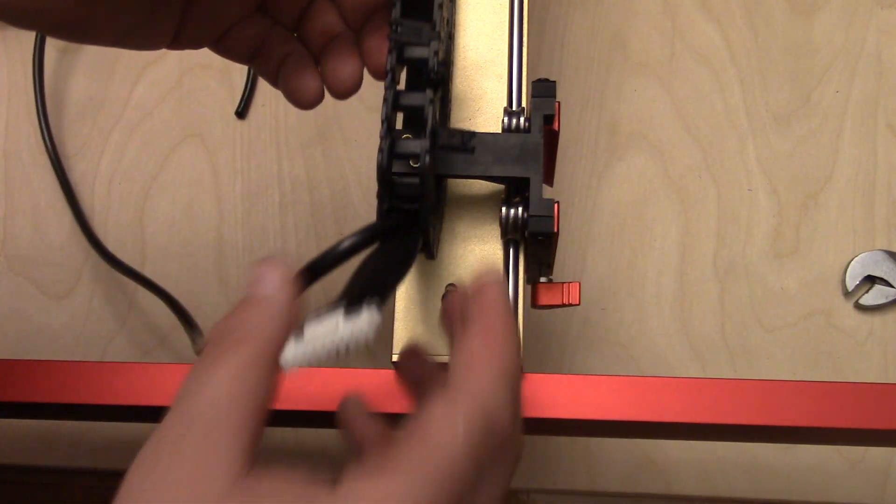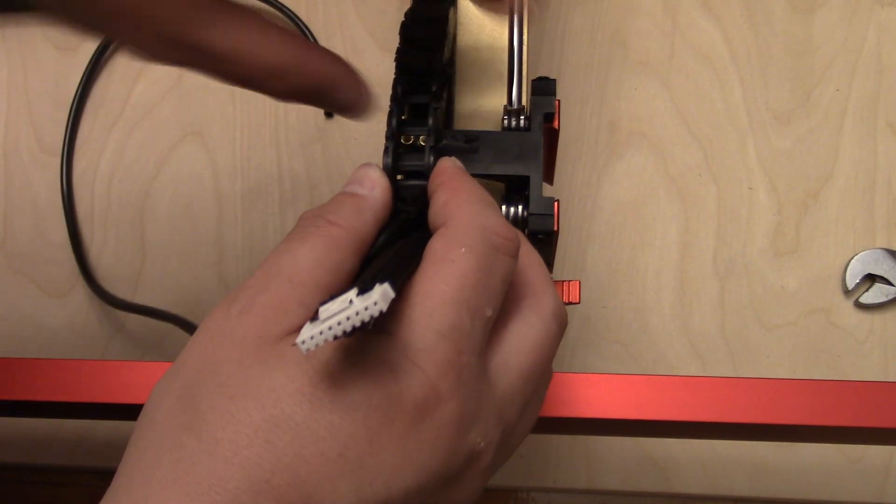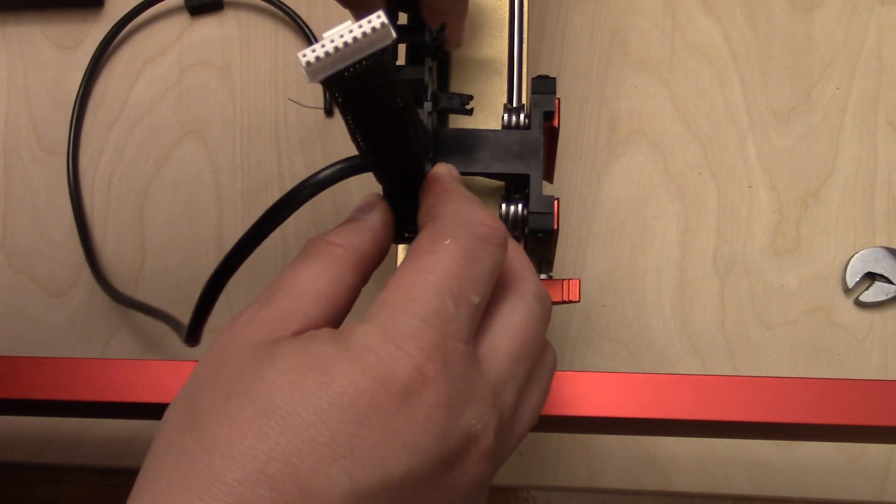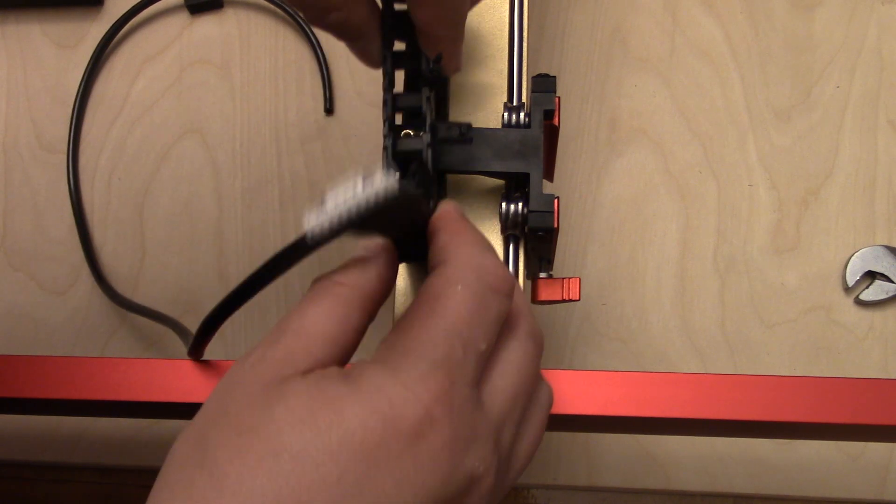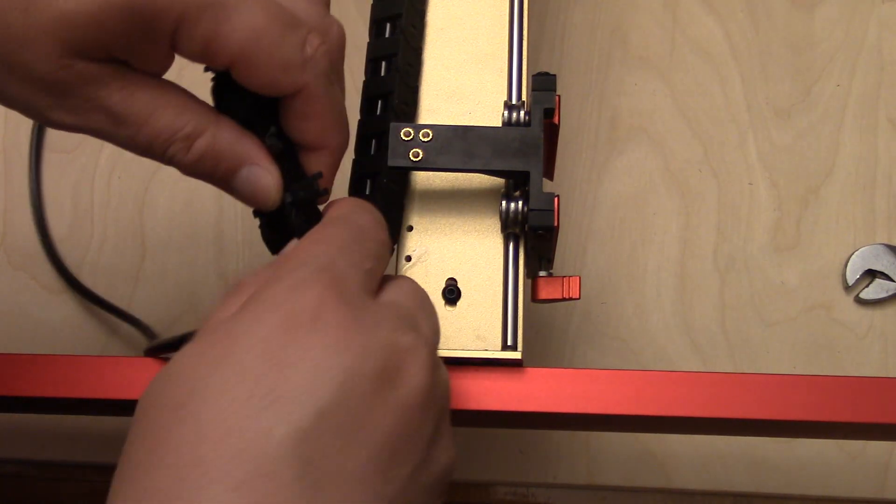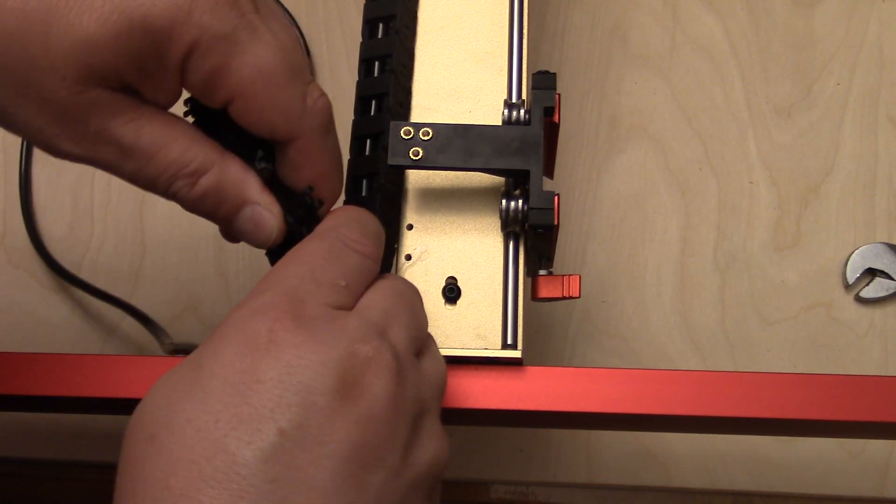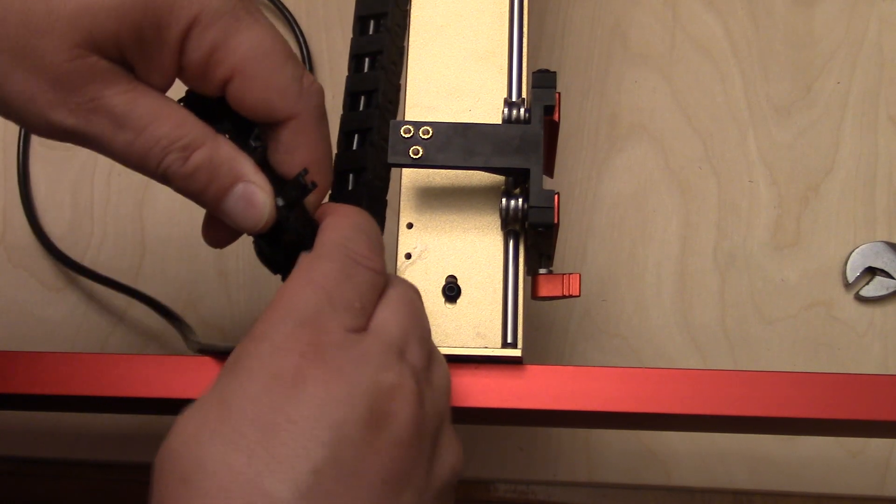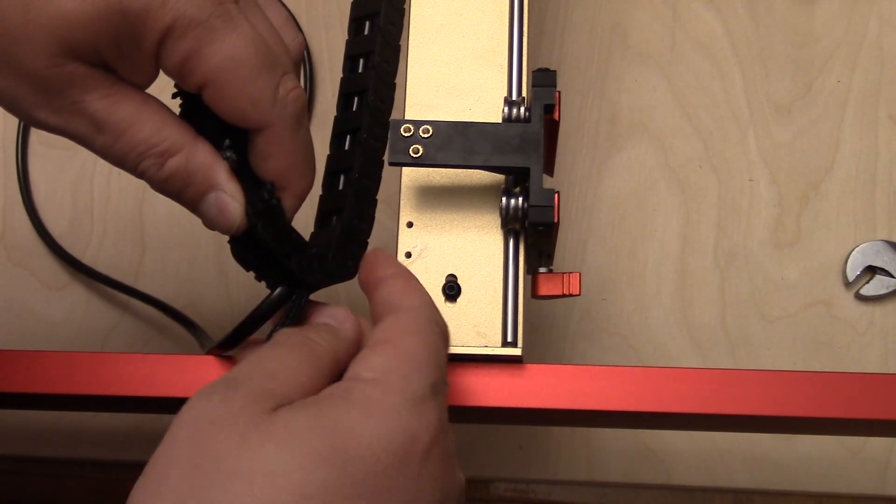I then extend my drag chain all the way to the opposite side so the drag chain was fully extended to make it easier to attach. I removed a few links from the chain to make it a better fit and give me some extra length in the wires to connect to the laser.